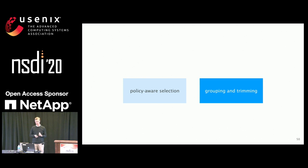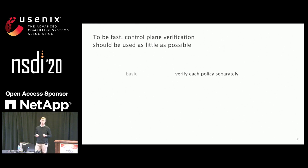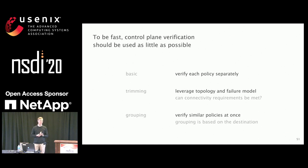For the verification part, we can improve by reducing the number of queries we have to ask the verifier. In a basic setup, you take every single policy and ask the verifier. However, we already know that some policies just cannot hold based on the topology and the failure model — for example, if we allow up to one failure and two routers are only connected by one link, it's clear there will be an environment where those two nodes are disconnected. Additionally, the verifier we use allows us to group policies with the same destination, so we can ask about multiple policies at once.